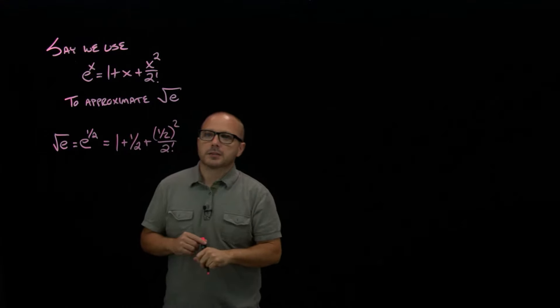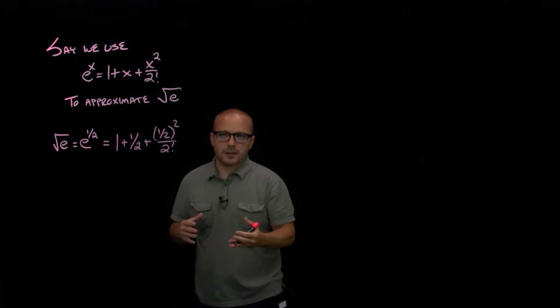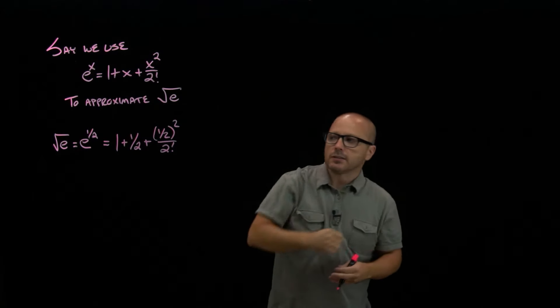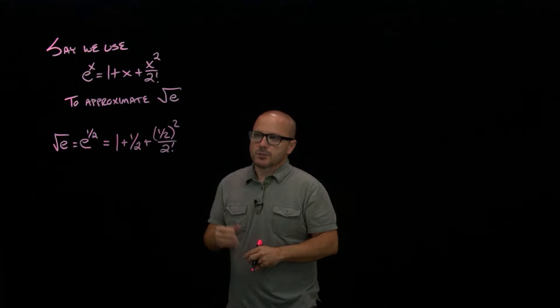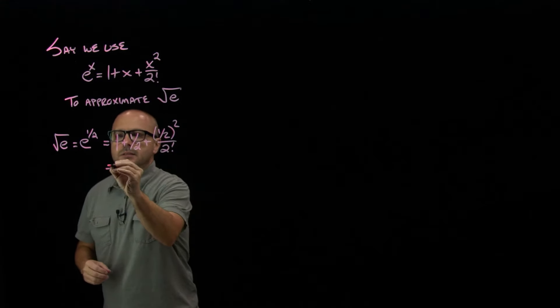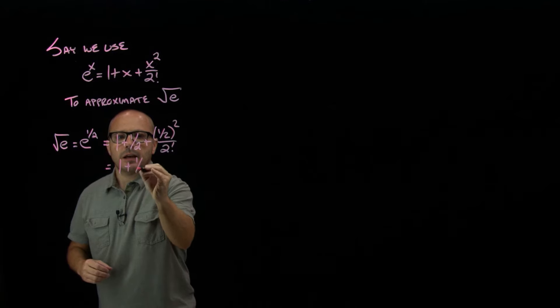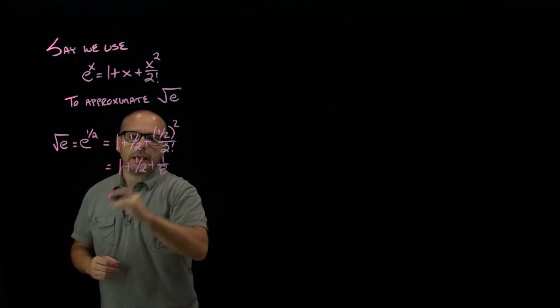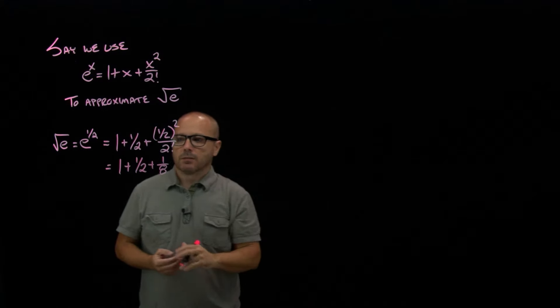And that's our approximation. That is not exact. Obviously, we've only used three terms. We'd have to have the entire series to get it exact. But there's our approximation. We could compute that. What is that? That is 1 plus 1 half plus 1 eighth. So 13 eighths, I guess.